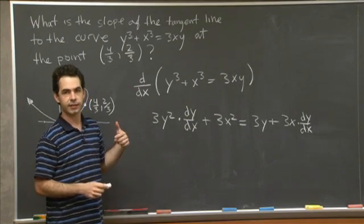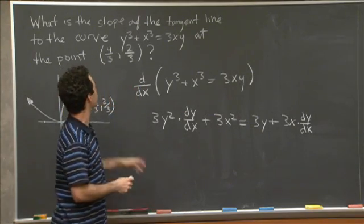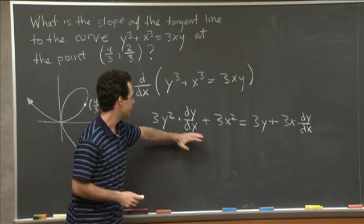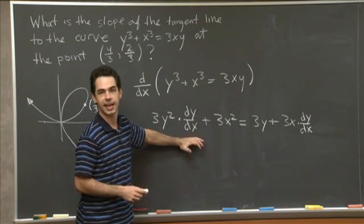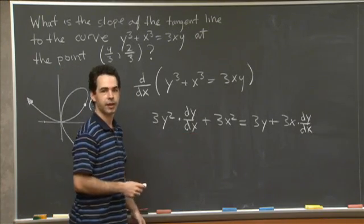Good. So now the thing we want is that we want the slope of the tangent line at a particular point. So we want to isolate dy dx. That's the thing we're trying to find.